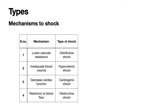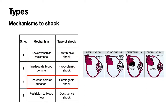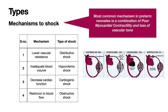Let's look at the types of shock with respect to underlying mechanism. Distributive shock is due to low vascular resistance. Hypovolemic shock is due to inadequate blood volume. Cardiogenic shock is due to decreased cardiac function, and obstructive shock is due to restriction to blood flow. An important thing to note is that the most common mechanism in preterm neonates is a combination of poor myocardial contractility and loss of vascular tone.